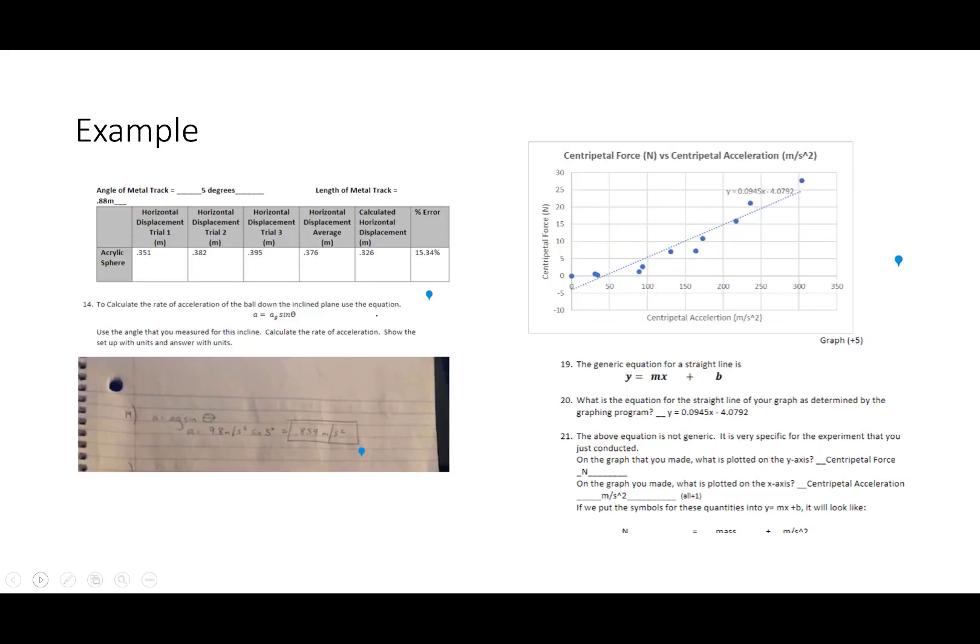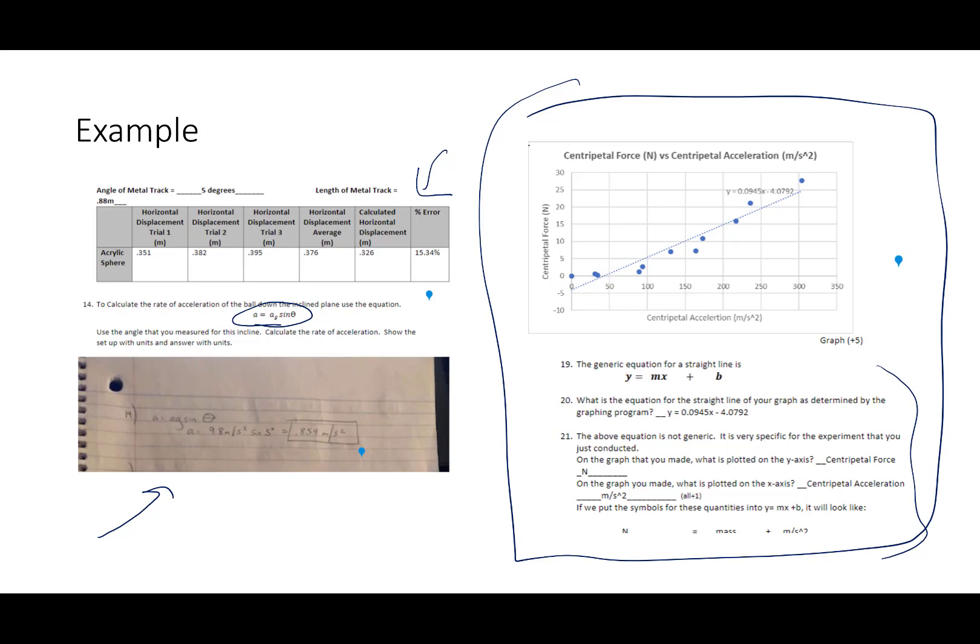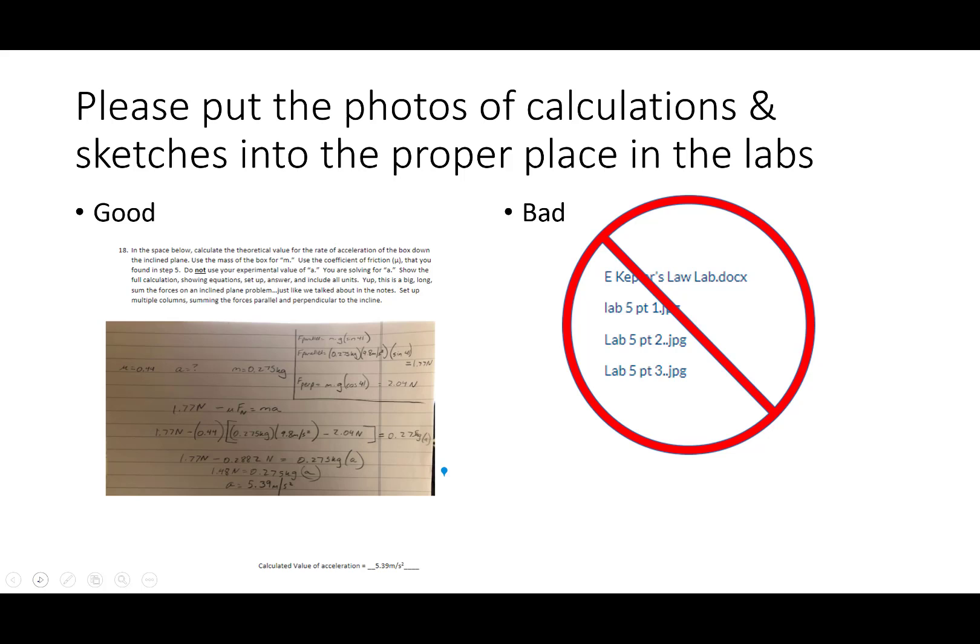Here's another example. This happens to be a physics, an online physics example, where there are data that is put in the data table. This happens to be typed in, the equation is typed in, but the actual calculation this person did by hand, took a photo and uploaded the photo in the correct spot. Here's another example from my physics class. The individual typed the answers in down here. There was a graph that was made in Excel, copied and pasted the graph, and the graph was inserted in the correct spot in the lab.